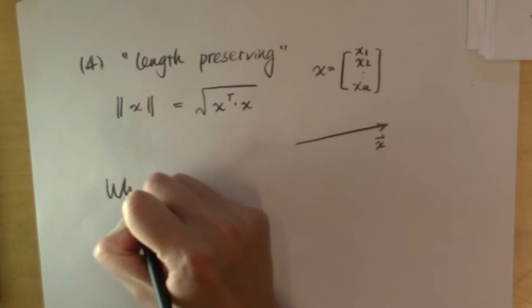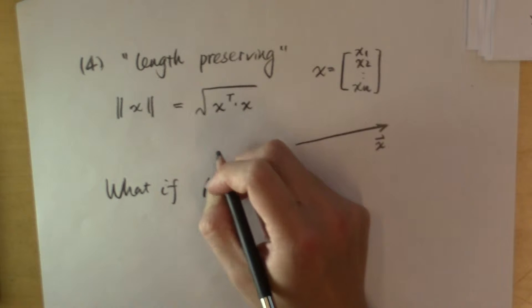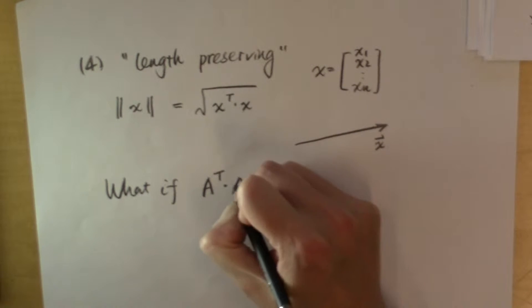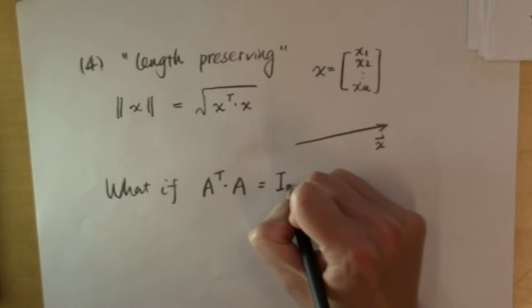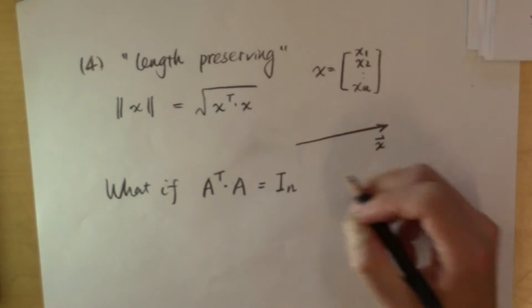Now, what happens if there is a matrix where its transpose multiplied itself is the n by n identity matrix?